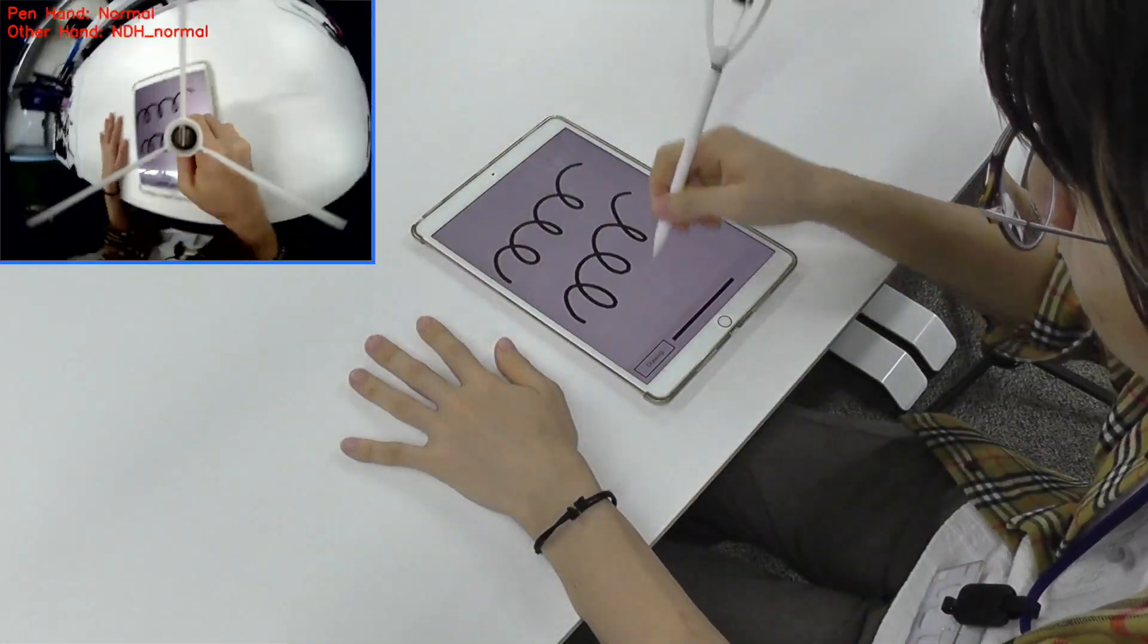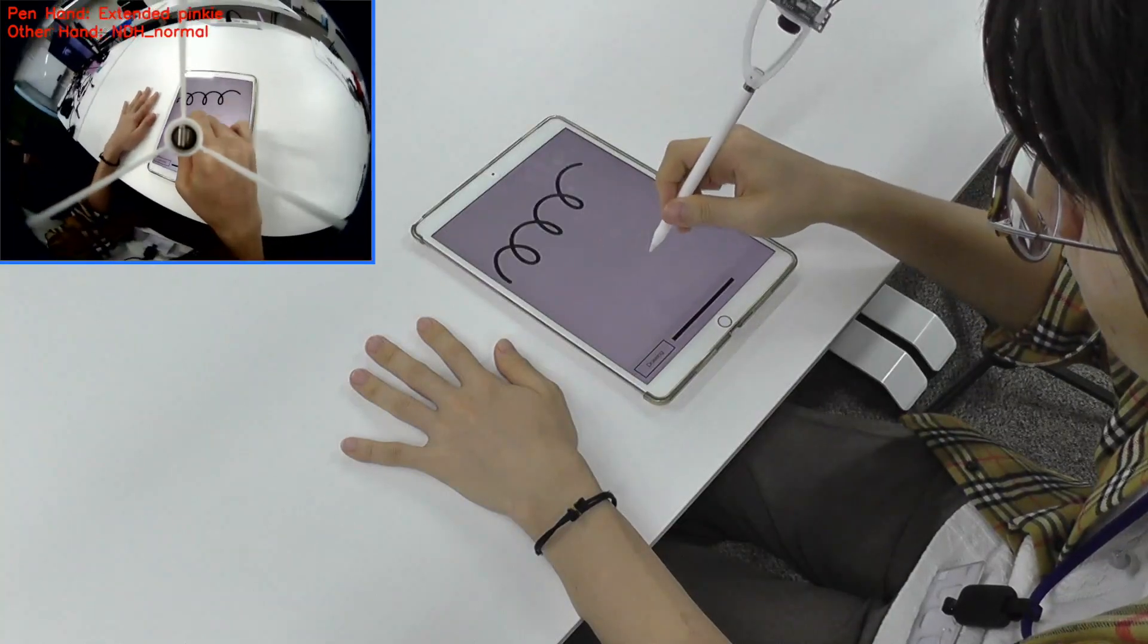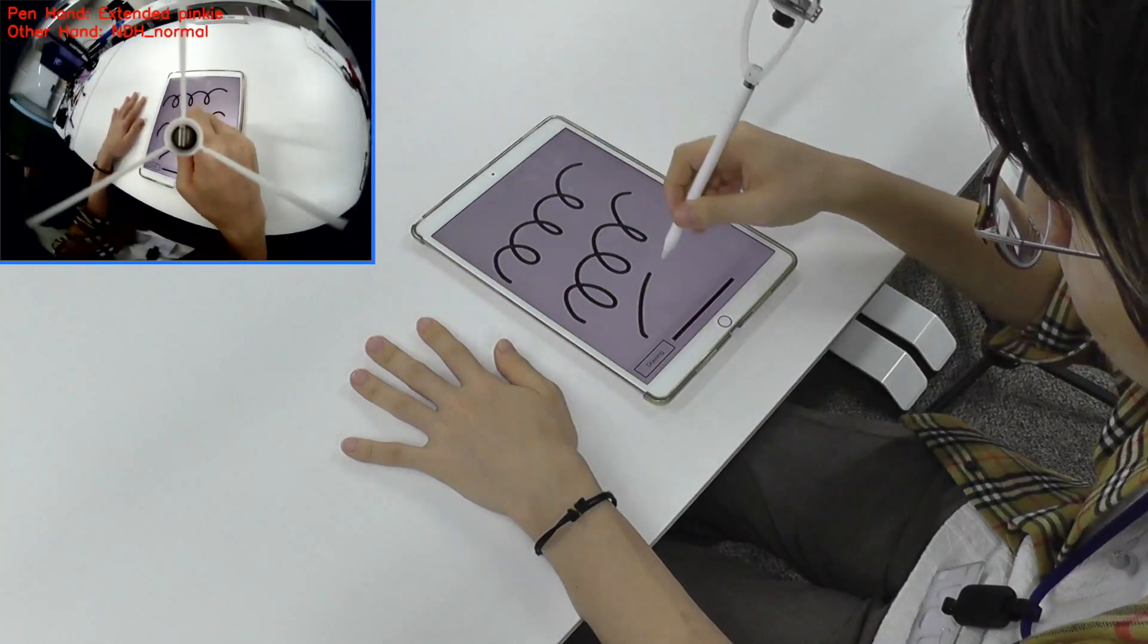Using computer vision and deep learning, hand postures can be recognized and used as shortcuts when associated with actions or modes in applications.